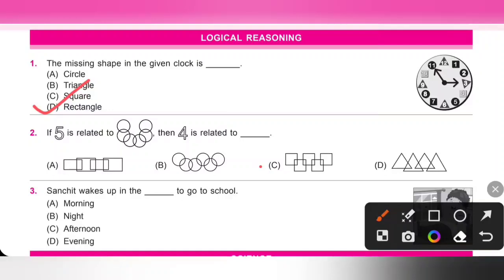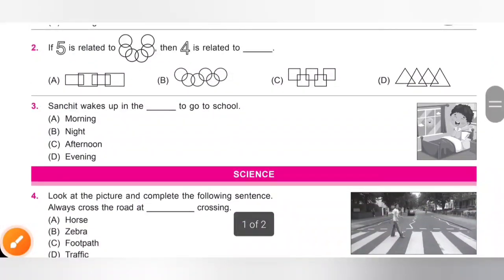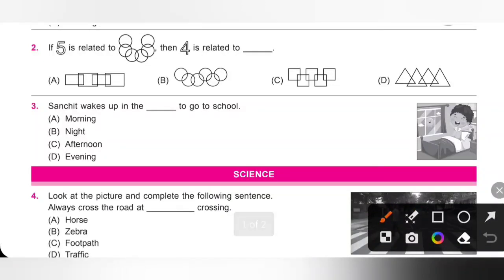Second one, if 5 is related to this one, then 4 is related to dash. Please pause the video and check the pattern. So, 5 is related to 6 interlocked circles. Then 4 is related to,